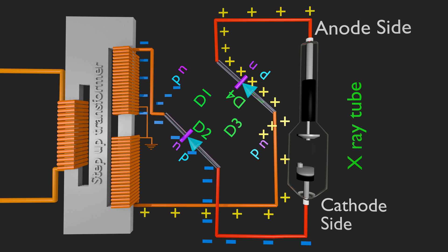So in either cycle of AC, bridge rectifier provides a positive polarity to anode then cathode, which makes X-ray production possible in both cycles of AC power supply.